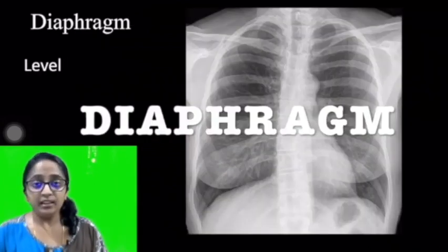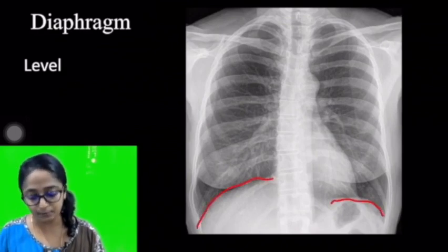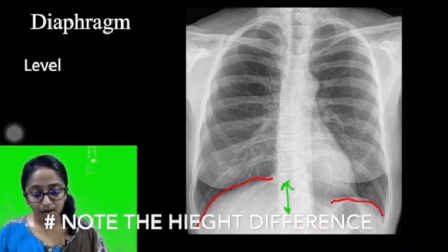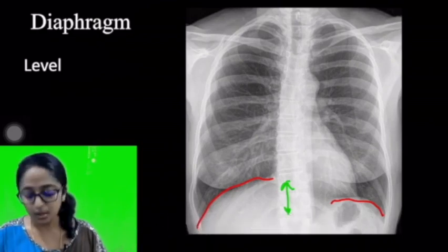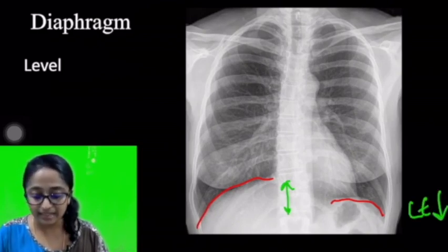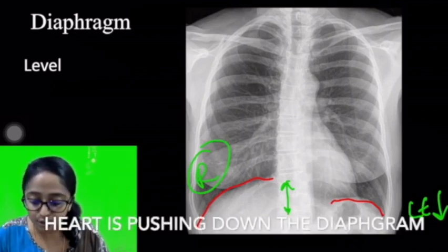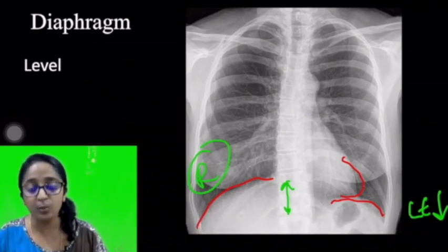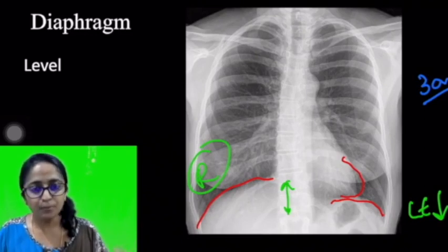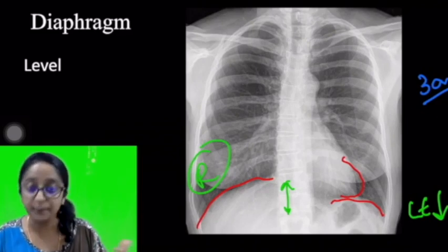Now going over to the diaphragm. As shown in the figure, this is the right hemidiaphragm and this is the left hemidiaphragm. What is striking is the height difference — similar to the hilum. The left diaphragm is at a lower level than the right because the heart is pushing it down. Up to about 3 centimeters of height difference, with the left diaphragm being lower, can be taken as normal.